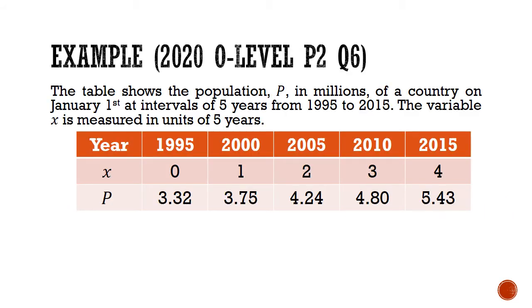Let's take the 2020 O-level paper 2 question 6 as our sample problem. The table below shows the population P in millions of a country on January 1st at intervals of 5 years from 1995 to 2015.